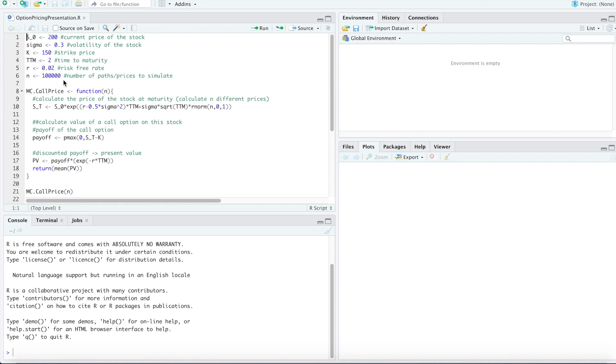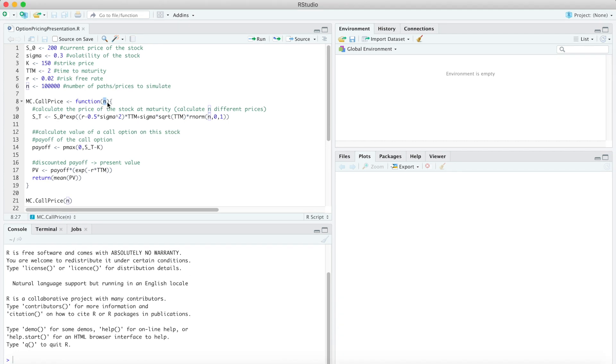So first we have to define a function that calculates the Monte Carlo estimate for the fair price of a European call based on n simulations. So n is our input parameter here. The first step in the function is that we calculate n prices of the stock at maturity T. So we did this by using the formula that we provided on the slides before.